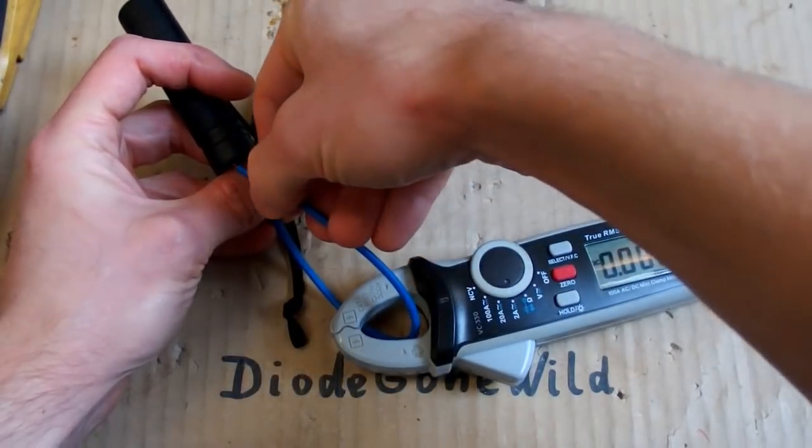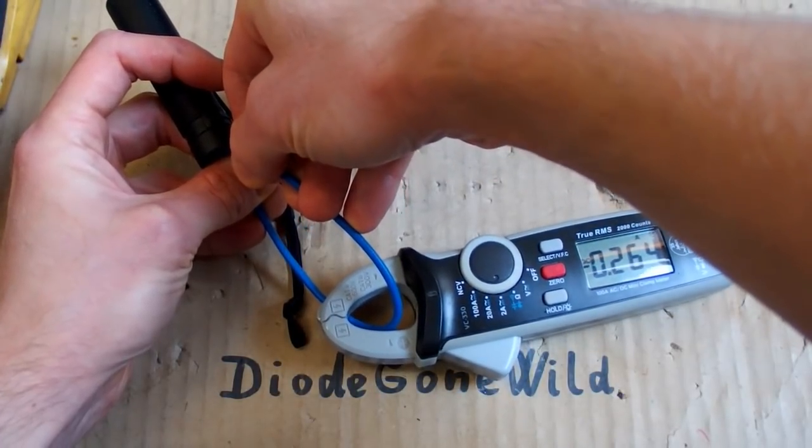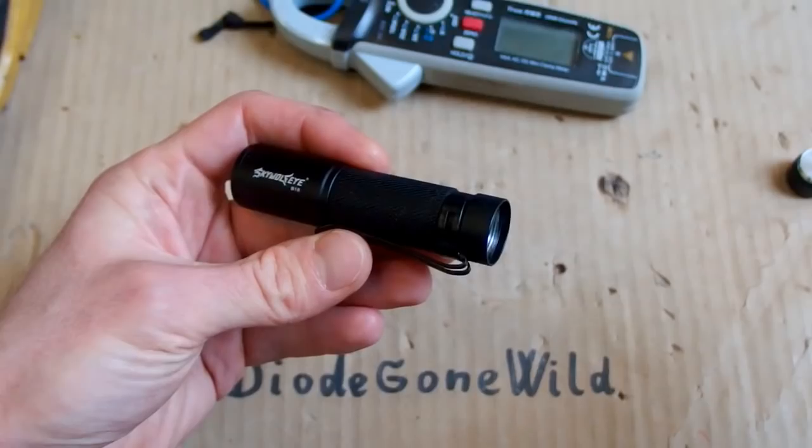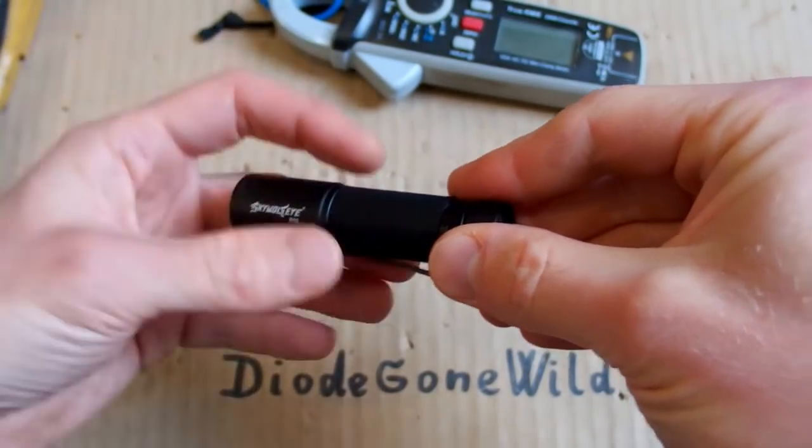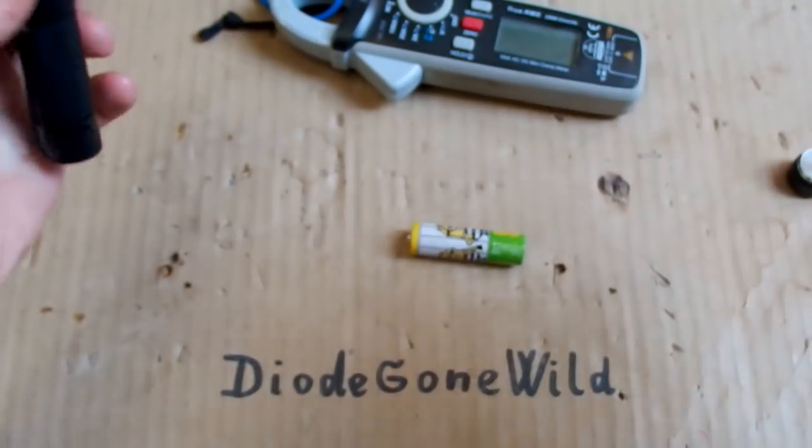At the low power setting it is 0.26 amps, which is about one quarter. Almost 1 amp at full power, so it really is quite powerful for such a tiny flashlight running on just one AA battery.